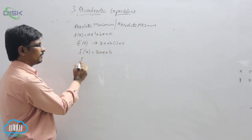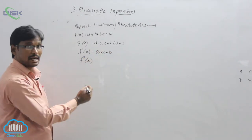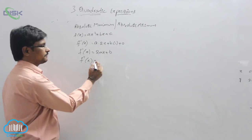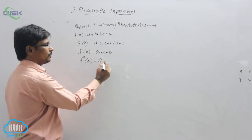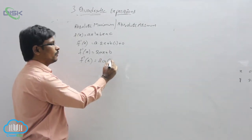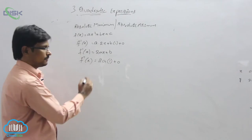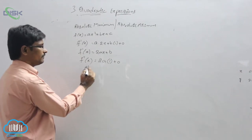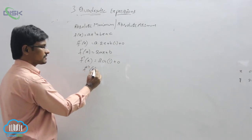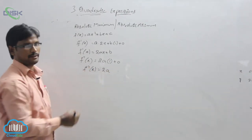Now find one more derivative. f double dash of x equals 2a times x derivative 1, plus constant derivative 0. So f double dash of x equals 2a.